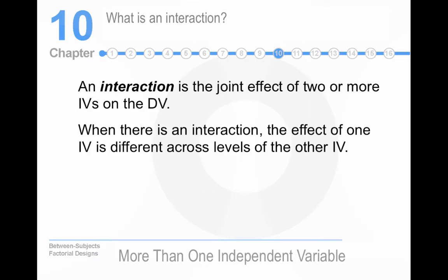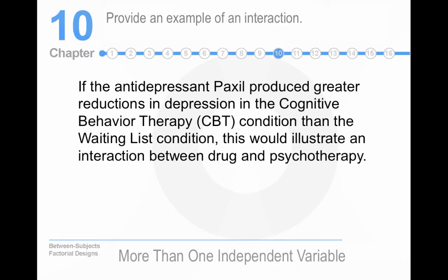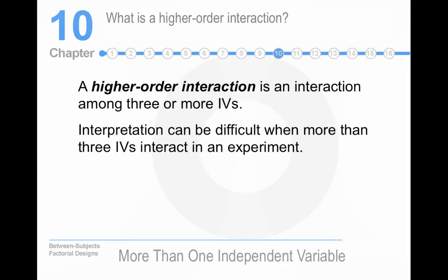So what is an interaction? When there's an interaction, the effect of one independent variable is different across levels of the other independent variable. So we could say from the example that I gave, perhaps people best remember information that's bad news that's read by a female child. Because maybe you would say that might be the most memorable because you might say, oh my gosh, why is that little girl reading sad news about the corn crop? And so you'd have an interaction there between gender, age, and the type of news that's being read. And then here's a different one. If Paxil produces greater reductions in depression in the cognitive behavioral therapy condition than the waiting list condition, that's an interaction between the drug and psychotherapy.